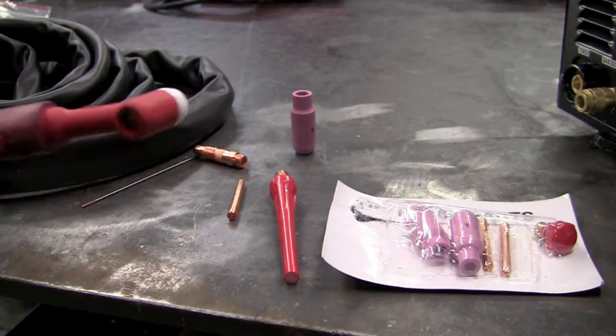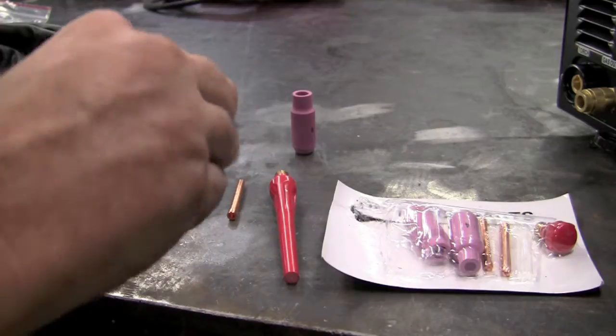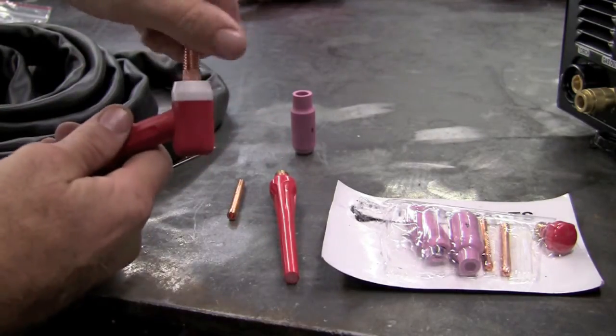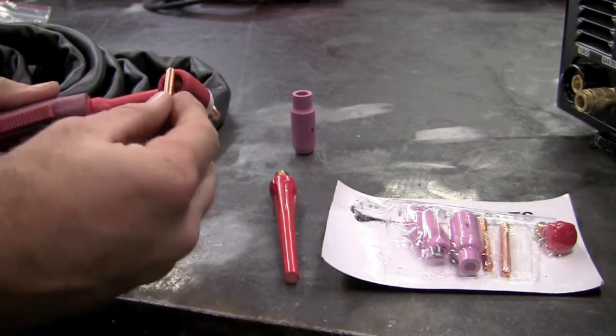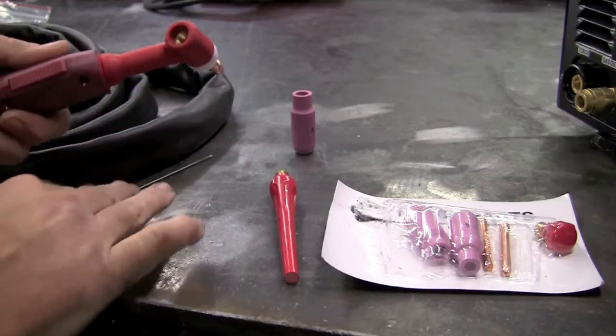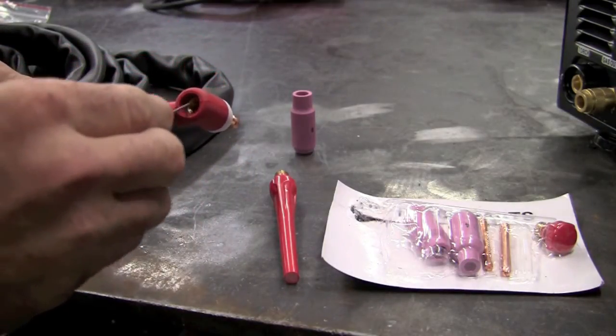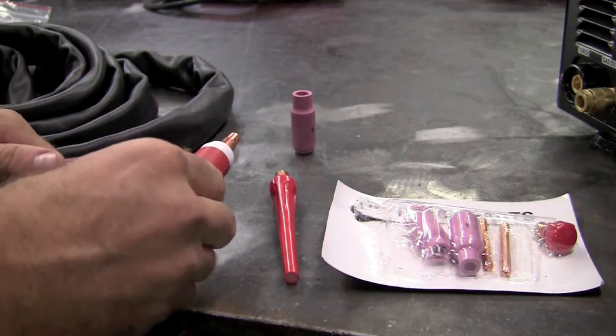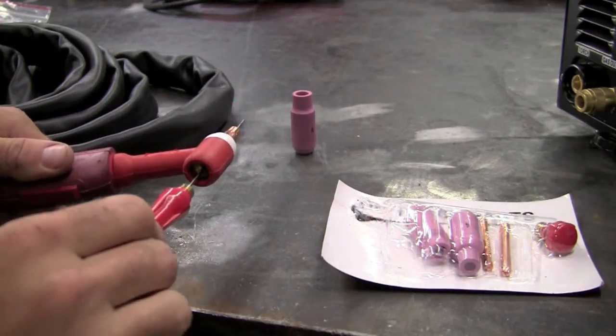Let's build the torch. First we'll take our collet body, and this just screws down in there. Then you'll select the appropriate size collet for the tungsten you're using. I have 1/16th, so I put the 1/16th in there. And being that I have a longer stick, there's a short top and there's a tall, long stem. So I'll select a long and I'll put that in.